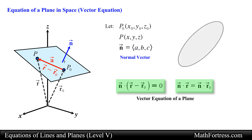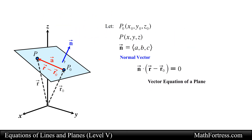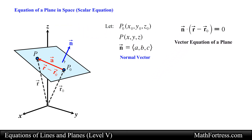One way to visualize this vector equation is to imagine a pair of orthogonal vectors that share an initial point and then visualize grabbing one of the vectors and twisting it. As you twist, the other vector spins around and sweeps out a plane. So every plane can be described by a vector on the plane and a vector perpendicular to it. Just like the vector equation of a line can be written in various alternative forms, we can also rewrite the vector equation of a plane in various alternative forms.